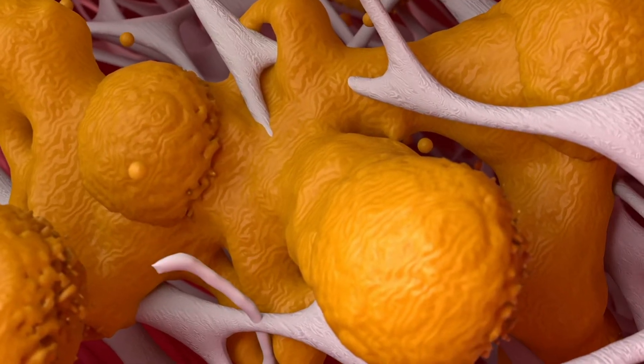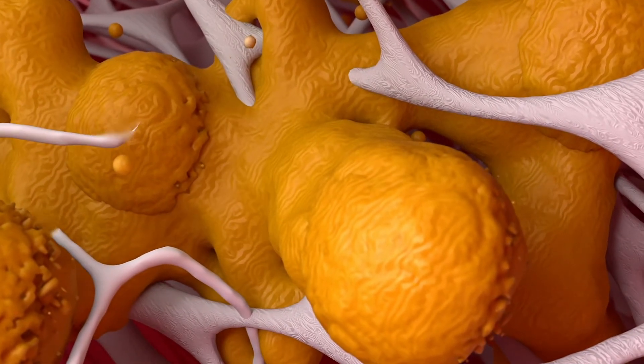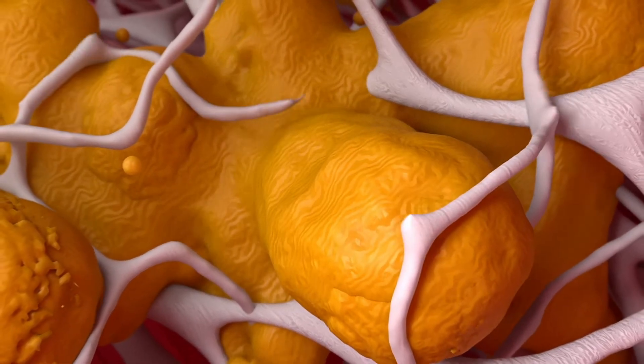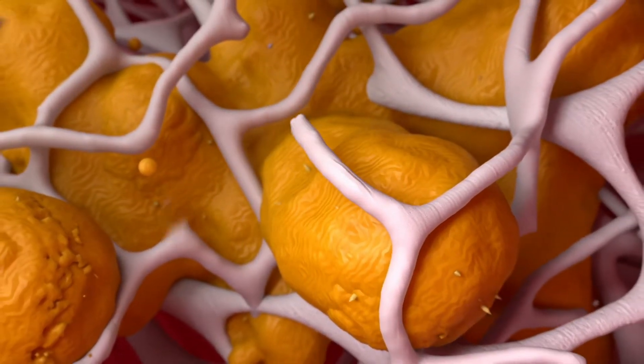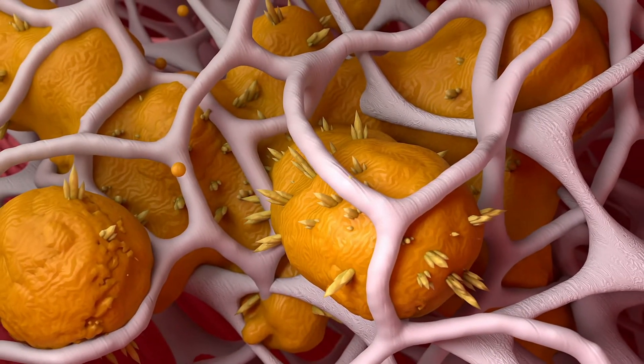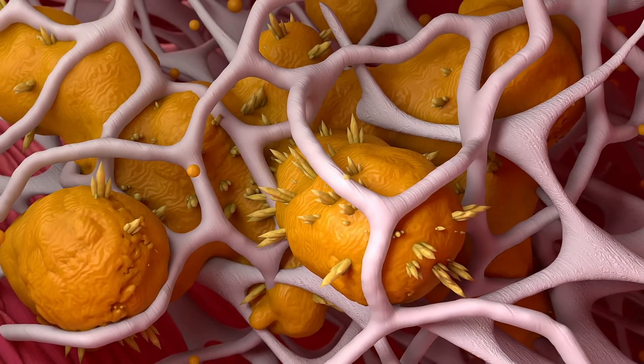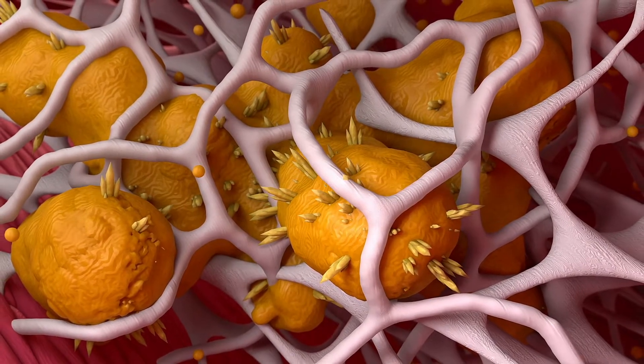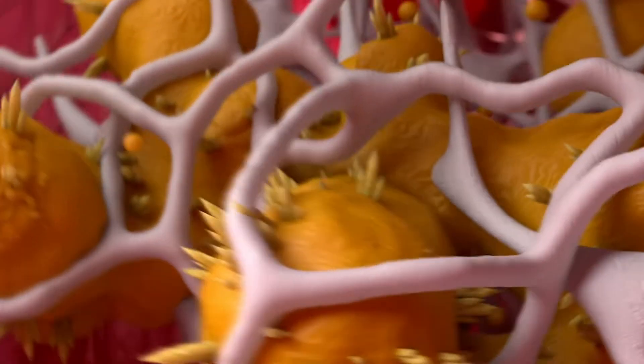Thus, cellular detritus, large numbers of foamy macrophages, collagen fibers, and cholesterol crystals form the bulk of the atherosclerotic plaque. Smooth muscle cells transform into fibroblasts and migrate to the top of the plaque, helping to stabilize its cap.